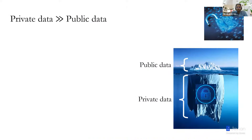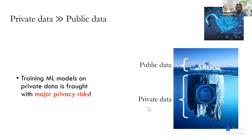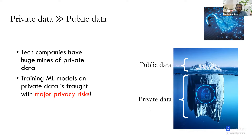The issue is that a lot of this data is private. If you think of the public data — what we see publicly on the Internet — it's the tip of the iceberg. There's a lot more underneath which is private and only these big companies have access to. This is a lot of data. But the issue for most companies is that this is private, sensitive data. So if you train a machine learning model on this private data and release it, there are major privacy risks.